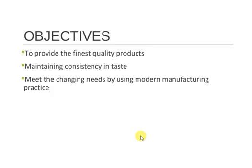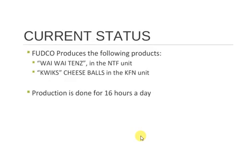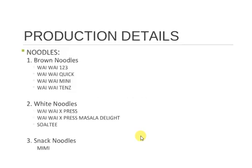Objectives: to provide the finest quality products maintaining consistency in taste, and to meet the changing needs by using modern manufacturing practices. Current status: Foodco produces the following products — in the NTF unit and Quicks Cheese Ball in the KFN unit. Production is done for 16 hours a day.